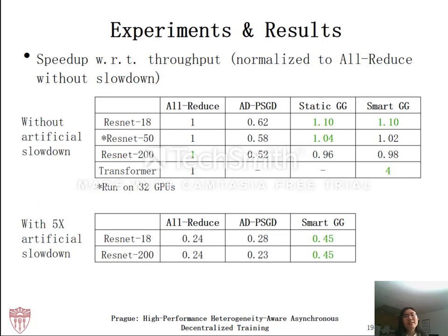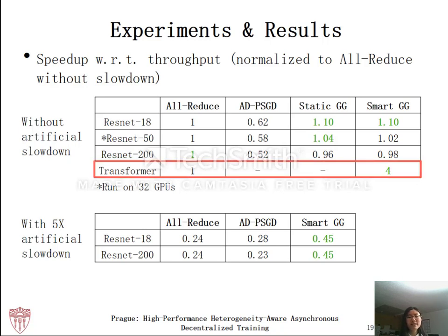In the results, we first show speedup with respect to throughput, normalized to allreduce without slowdown. The highest speedup in each setting is SmartPrague (green). We can see that without slowdown, Prague can achieve similar or better performance compared to allreduce. With slowdown, SmartGG can greatly outperform allreduce. The result on the transformer model is especially exciting: even without artificial slowdown, SmartGG achieved four times speedup compared to allreduce. We argue this is because the transformer model is more communication-bound compared to CNNs, so it benefits more from our optimizations.